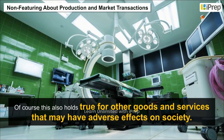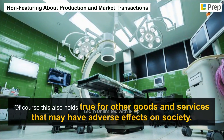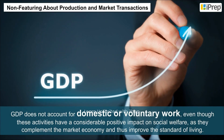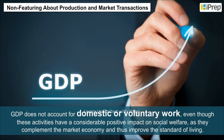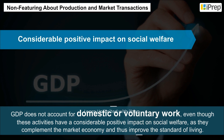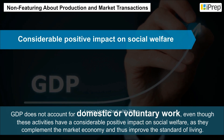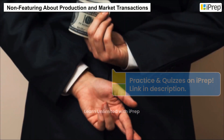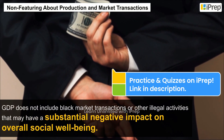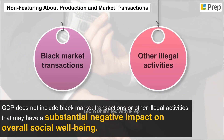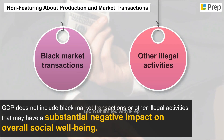This also holds true for other goods and services that may have adverse effects on society. GDP does not account for domestic or voluntary work, even though these activities have a considerable positive impact on social welfare, as they complement the market economy and improve the standard of living. On the other hand, GDP does not include black market transactions or other illegal activities that may have a substantial negative impact on overall social wellbeing.